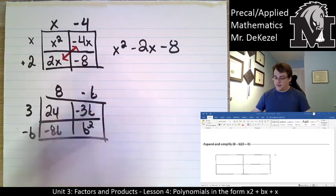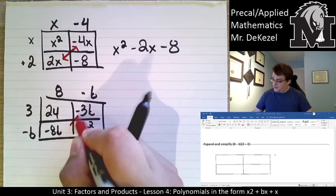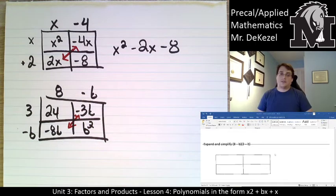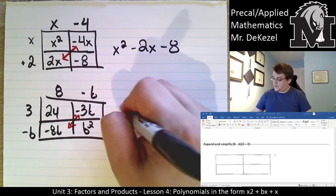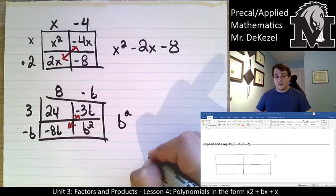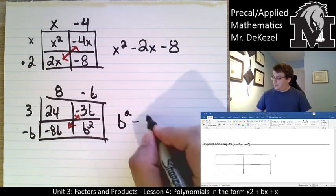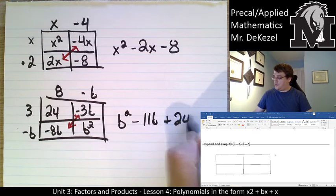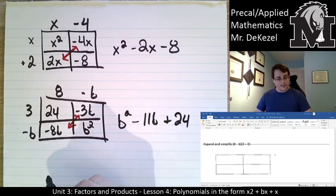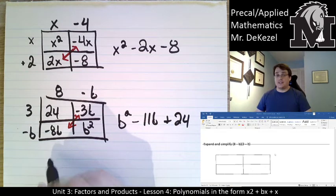So then we can notice that these two are the same terms so we can combine them. So we always write the squared portion first: b squared minus 3b minus 8b, that's minus 11b, and then plus 24. There's your answer, easy as that.